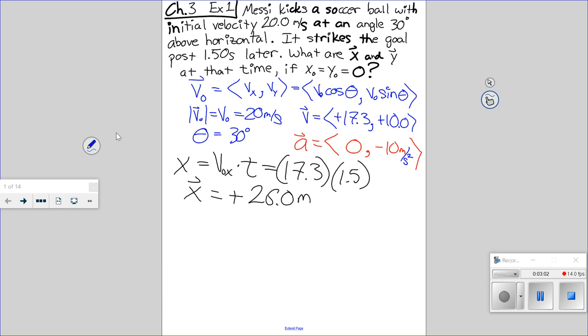Okay. On the Y side, I have to use equation two. Y zero is zero. It says that in the problem. V zero Y was that plus 10 that I calculated. Plus 10 times the time of 1.5. This one accelerates down. Minus one half, oh, I should do plus one half, times negative 10.